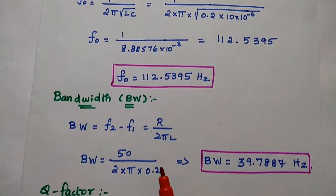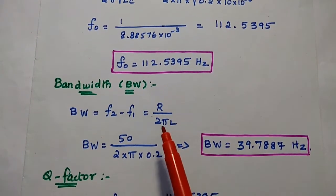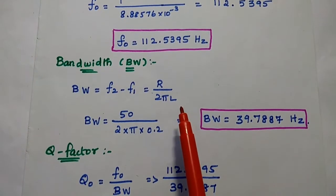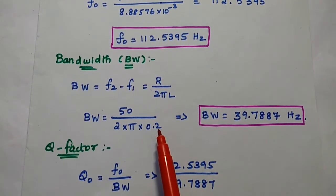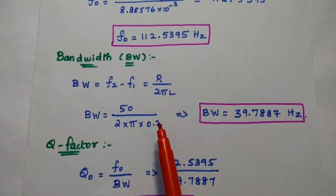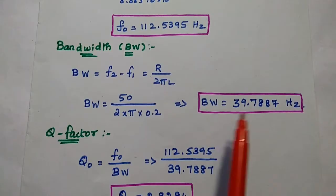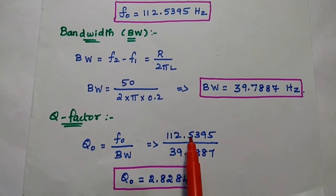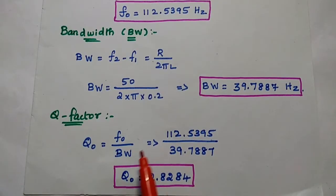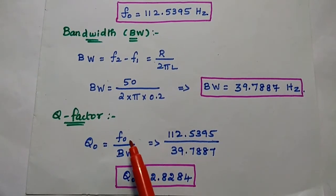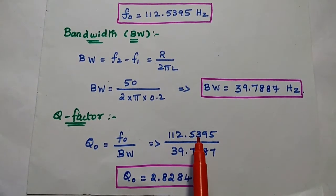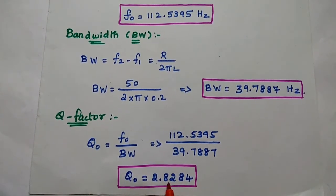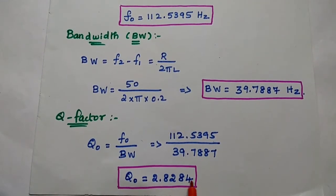Next, bandwidth equals F2 minus F1, which also equals R by 2πL. Substituting R equal to 50 and L equal to 0.2: 50 divided by 2π into 0.2, giving 39.7887 hertz. Then the quality factor Q equals the ratio of resonant frequency to bandwidth: 112.5395 divided by 39.7887 equals 2.8284. That is the quality factor value.